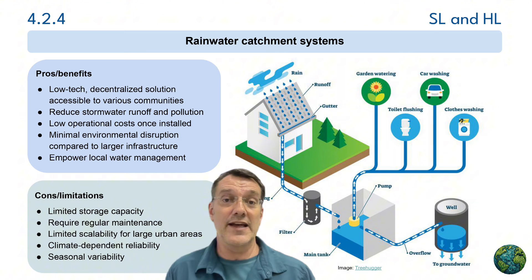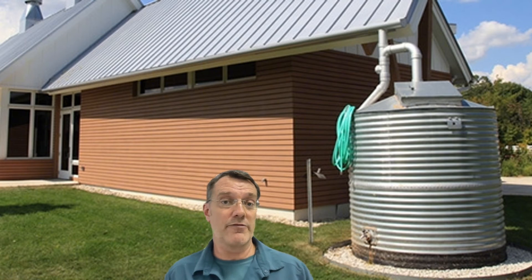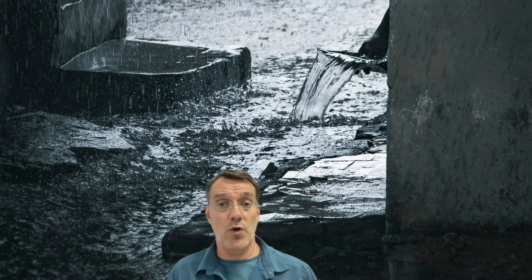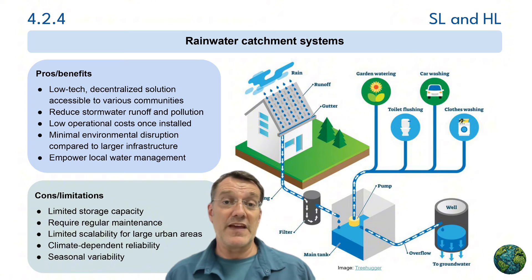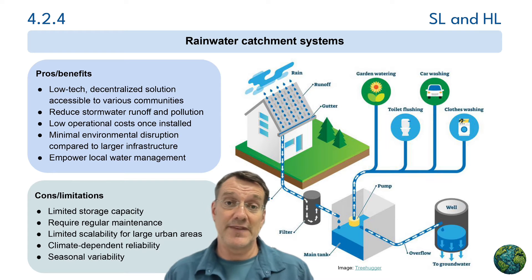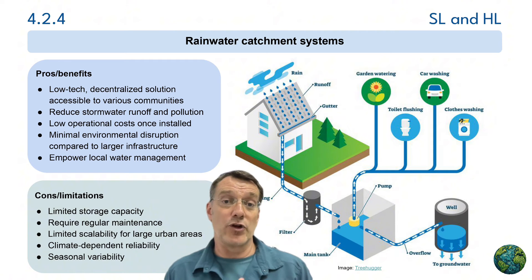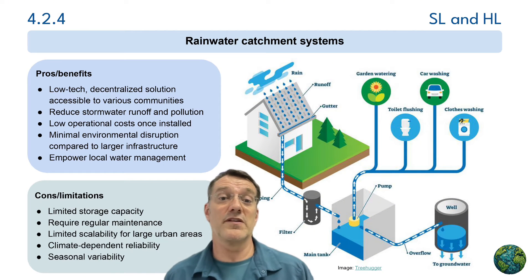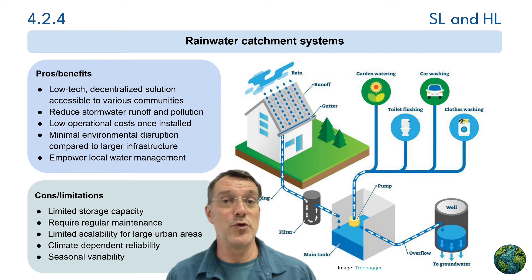Rainwater catchment systems offer a low-tech, decentralized approach to water collection. These systems capture rainfall from roofs or other surfaces and store it for later use. Their benefits include reduced stormwater runoff, low operational cost after installation, minimal environmental disruption, and enhanced local water management. However, they have some limitations: limited storage capacity, regular maintenance requirements, limited scalability for large urban areas, and climate dependency. These systems work particularly well in areas with consistent rainfall patterns, and they can supplement, but not necessarily replace, municipal water supplies.